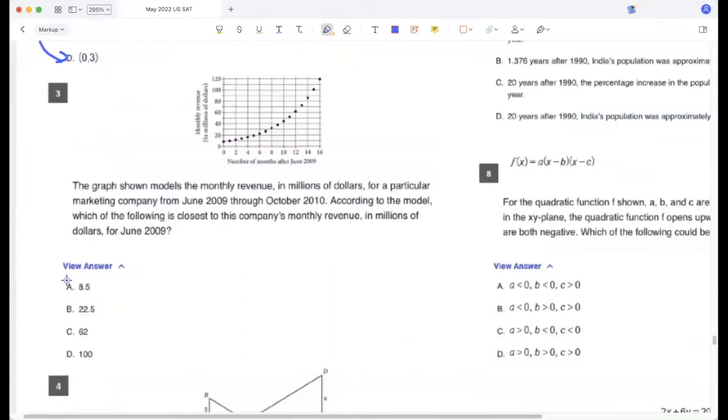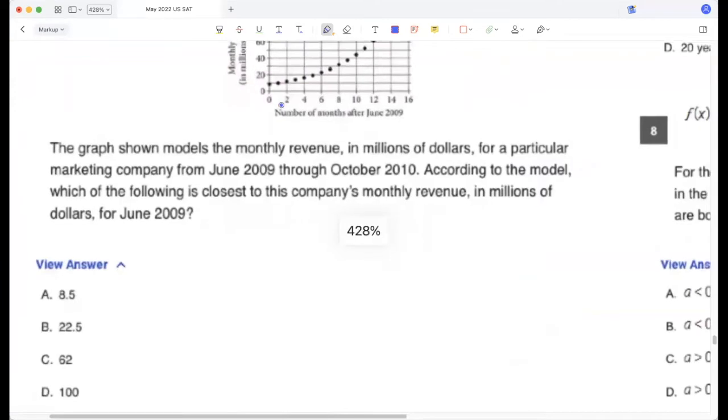The graph shown models the monthly revenue in millions of dollars for a particular marketing company from June through October. According to the model, which of the following is closest to this company's monthly revenue for June 2009? Okay, so June 2009 is starting from here. So that would be 8.5.